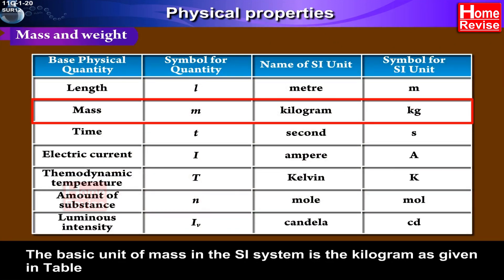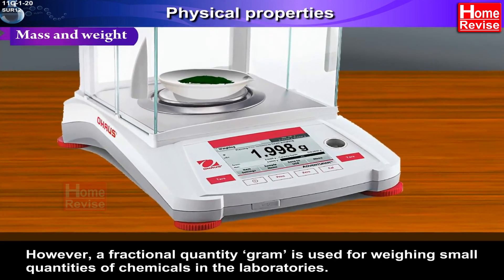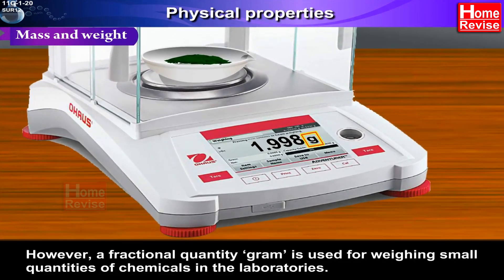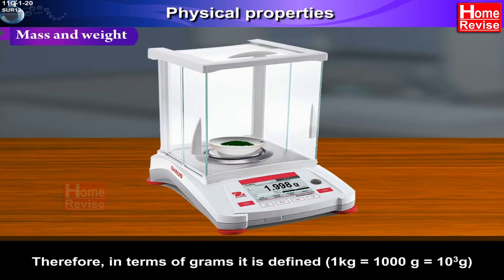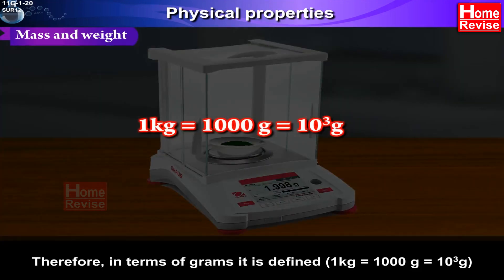Hence the mass of a body is a more fundamental property than its weight. The basic unit of mass in the SI system is the kilogram as given in table. However, a fractional quantity gram is used for weighing small quantities of chemicals in the laboratories. Therefore, in terms of grams it is defined: 1 kilogram is equal to 1000 grams is equal to 10 raised to 3 grams.